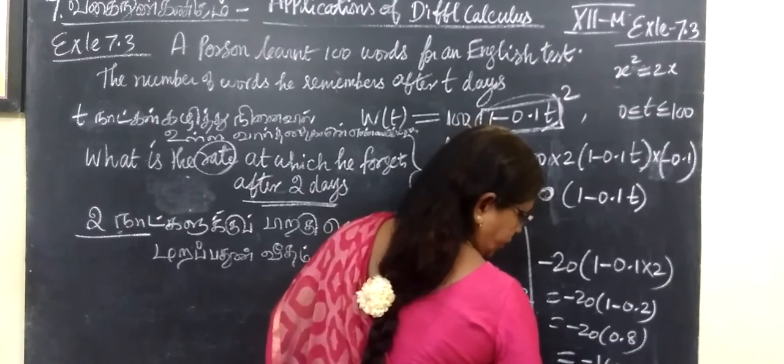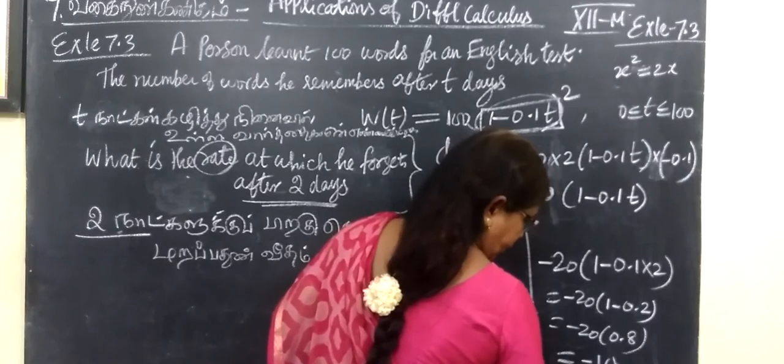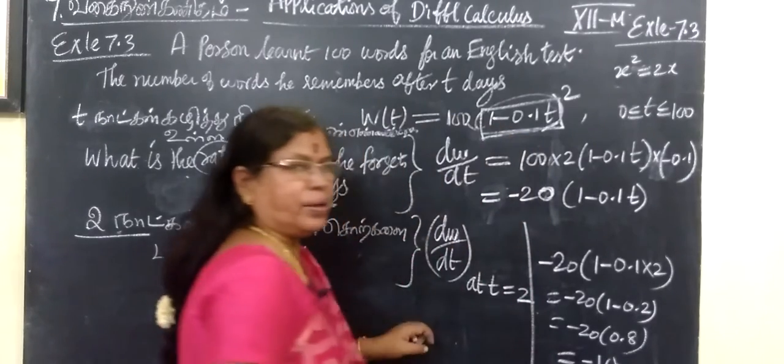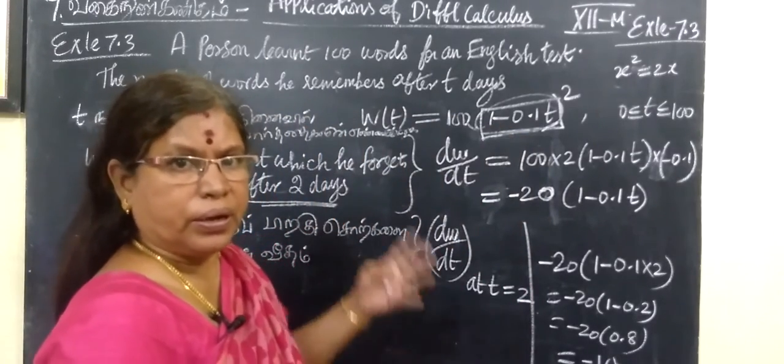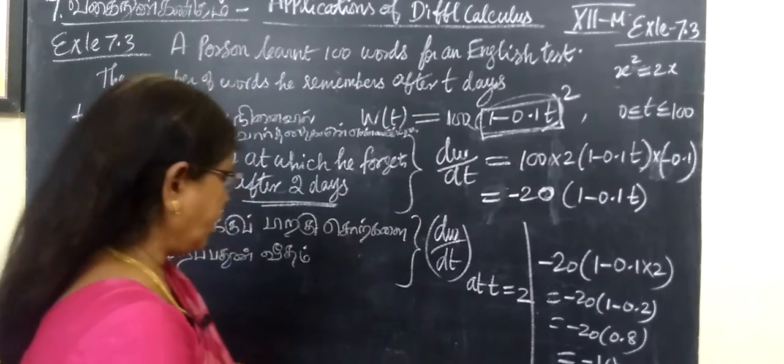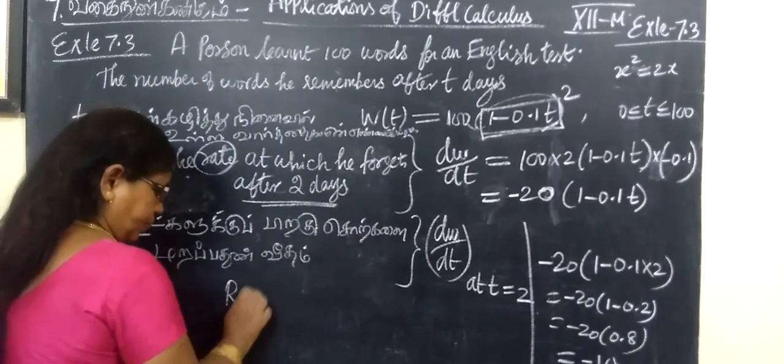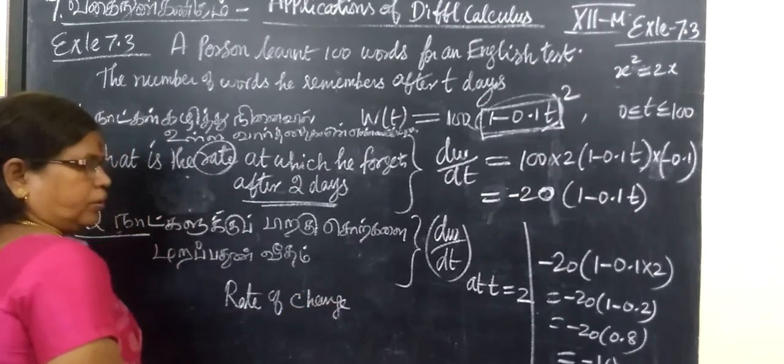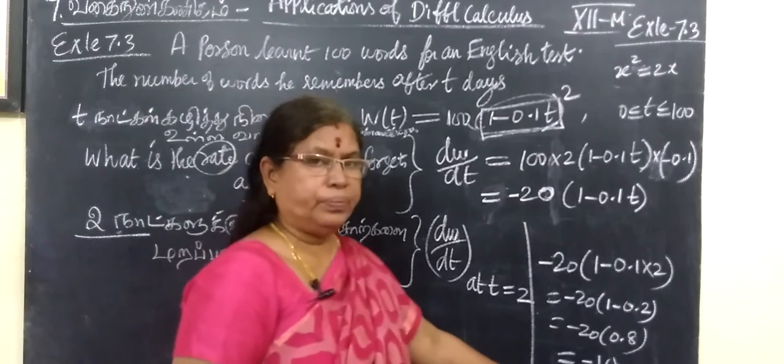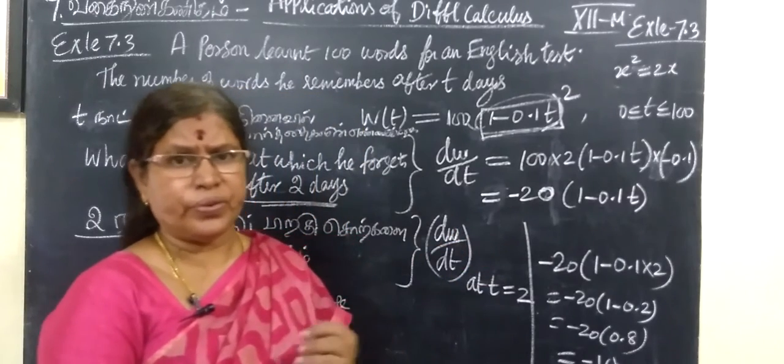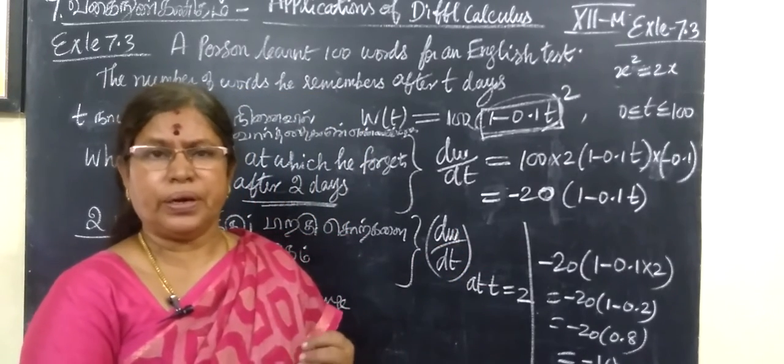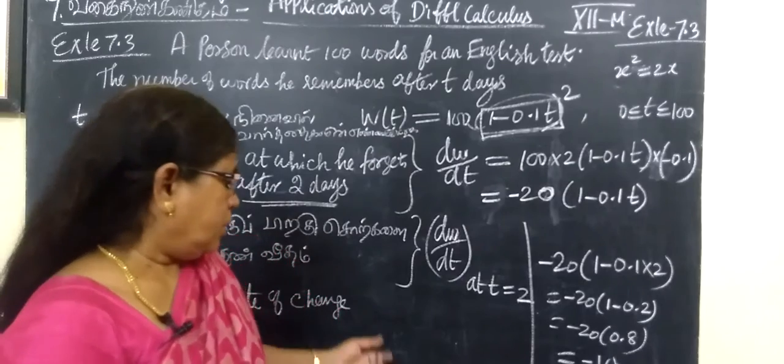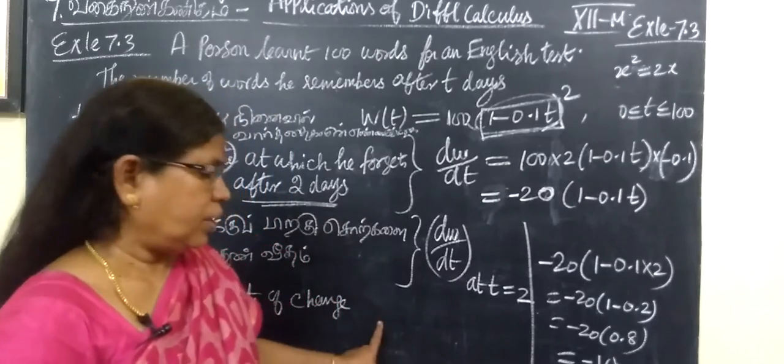The answer is minus 16. Minus, reducing, decreasing. Rate of change when you write rate of change, minus means forgetting, reducing. You write the answer as 16 words per day.